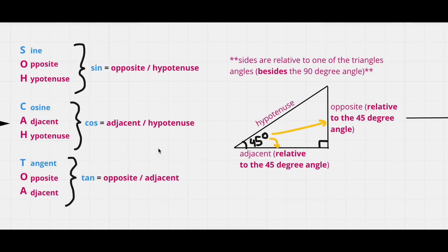For any given angle — let's say this 45-degree angle — we can calculate the value of any of these primary trig ratios for any angle in a right triangle, except the right angle itself. For example, to calculate sine 45, we find the length of the opposite side and divide it by the length of the hypotenuse.